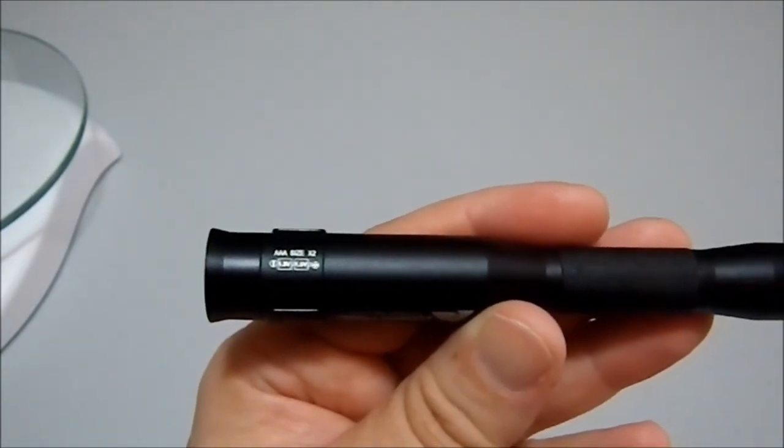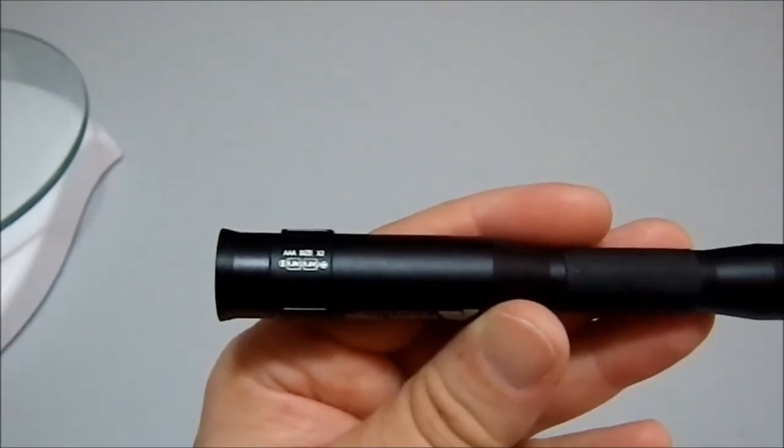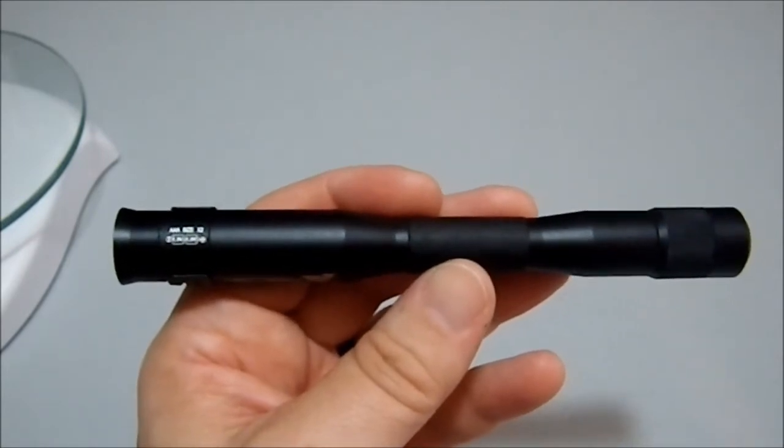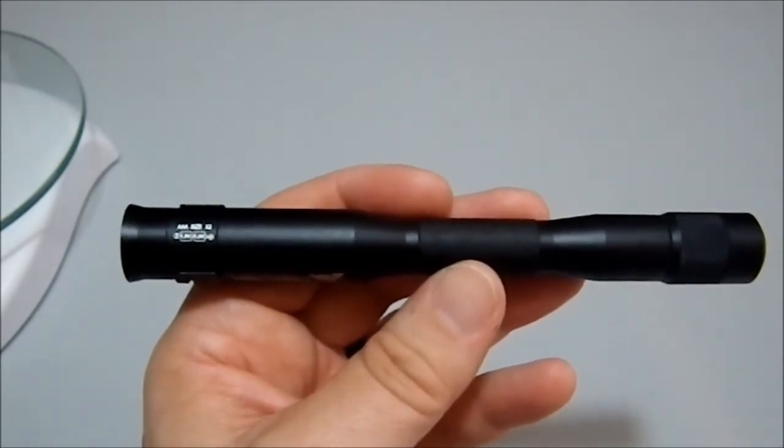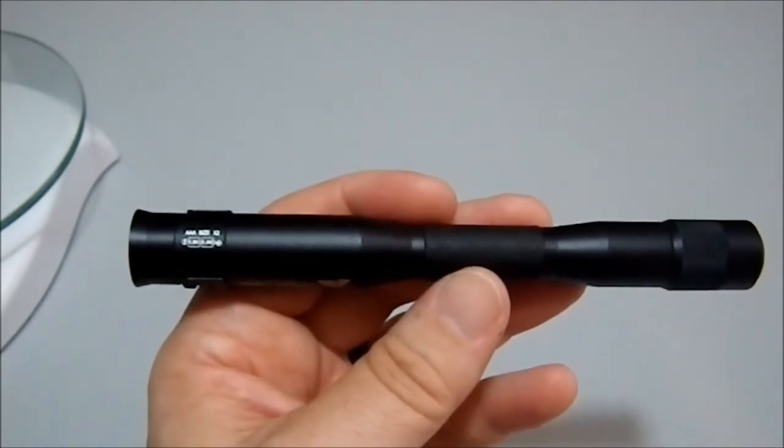It tells you right on the flashlight how many batteries, what type of batteries, and how they're oriented. That, to my mind, is major kudos to the Ozark designers out there. They did an excellent job. And I have no idea if this is an exclusive Ozark, or is the Ozark rebranding a flashlight designed by somebody else? I don't know.